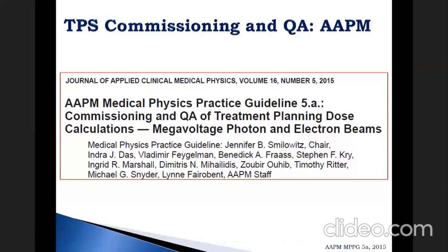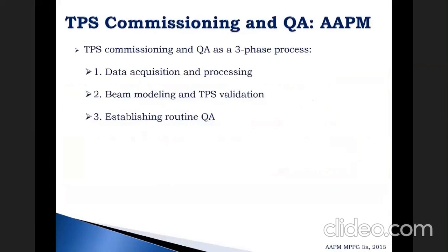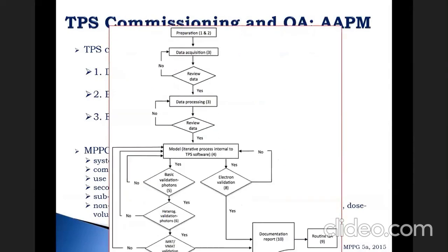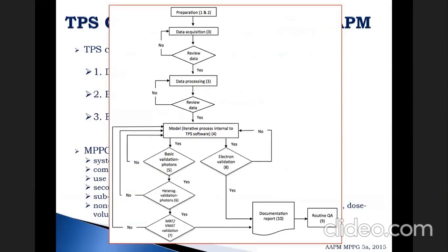From AAPM, we have Medical Physics Practice Guideline 5a on the commissioning and QA of treatment planning dose calculations for megavoltage photon and electron beams. TPS commissioning and QA is seen as a three-phase process: data acquisition and processing, beam modeling and TPS validation, and establishing routine QA. This guideline is not applicable to systems without MLC for beam shaping, small field TPS, non-commercial TPS, secondary MU verification software, brachytherapy, or non-dosimetric components like biological response models, DVH, image registration, or contouring.